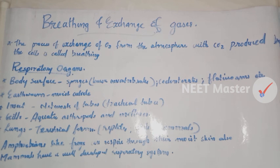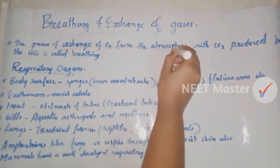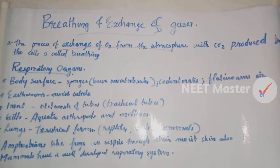We are going to talk about oxygen in our organs. We are going to use oxygen to break down glucose. The process of exchange of oxygen from the atmosphere with the carbon dioxide produced by cells is called breathing, commonly known as respiration.